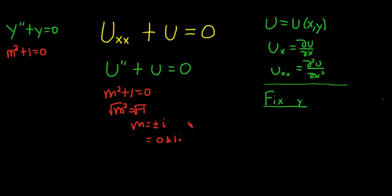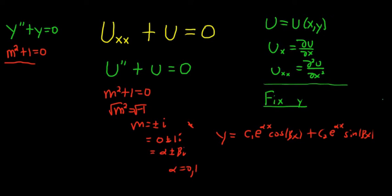And I'll refresh your memory. Whenever you have complex roots to the characteristic equation, the answer takes the form y equals c1 e to the alpha x cosine beta x plus c2 e to the alpha x sine beta x. And in this problem here, this is alpha plus or minus beta i. So alpha is 0 and beta is 1.